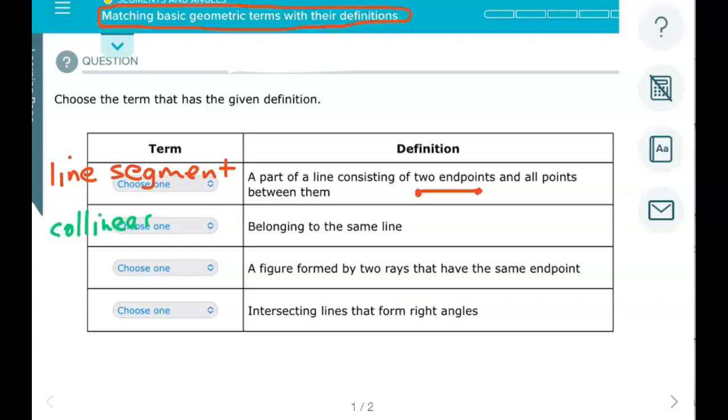A figure formed by two rays that have the same endpoint - so if I drew that, it would look something like this. There's a ray, here's another ray with the same endpoint. That's called an angle.